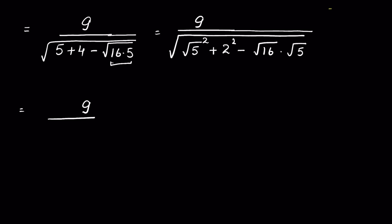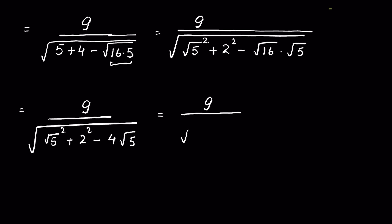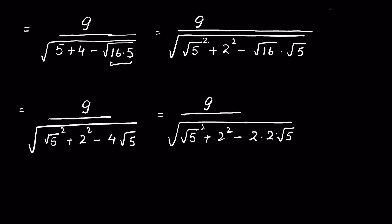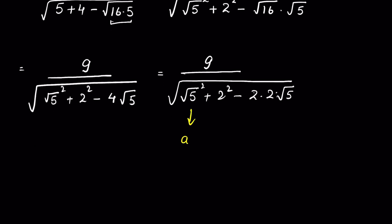This is equal to √((√5)² + 2² - 4√5). We can write 4 as 2×2, giving √((√5)² + 2² - 2×2×√5). Now if √5 = a and 2 = b, this is a² + b² - 2ab, which is the algebraic identity (a - b)².